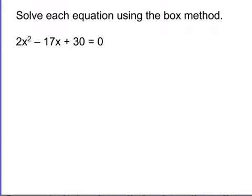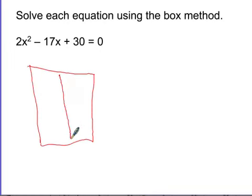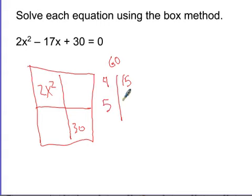Alright, last one. 2x squared minus 17x plus 30 equals 0. Box method. My boxes are getting sloppier and sloppier. 2x squared and 30. So what number are we factoring? 60. So do I really need to check 1 and 60? I don't think so. What about 2 and 30? No, that's not going to work. How about 4 and 15? 5 and 12. Ooh, I like that one. That's looking good. So let's try 5 and 12. Negative 5 times negative 12 is positive 60. And negative 12 plus negative 5 is negative 17. So I like that. Negative 5x, negative 12x.